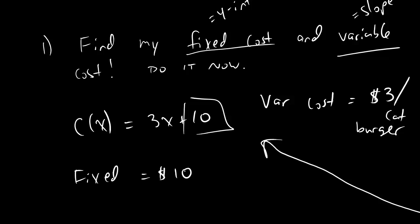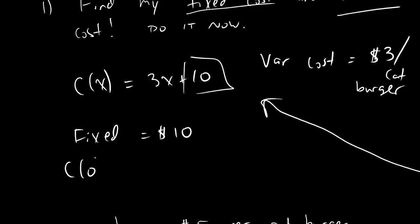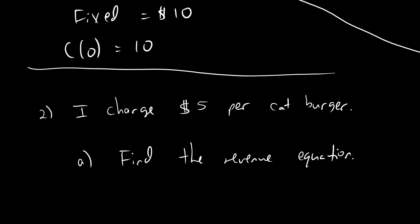And fixed cost is the y-intercept. So in this case, fixed cost equals 10. And remember what that means is that it costs us $10 to get our organization set up before we even start making any catburgers. So the cost of buying all the equipment and the cost of advertising and all that stuff, the cost of doing everything necessary to make zero cats. That's our fixed cost. So that's our fixed cost and variable cost. And again, you just want to find the equation of the line and then read the values off.